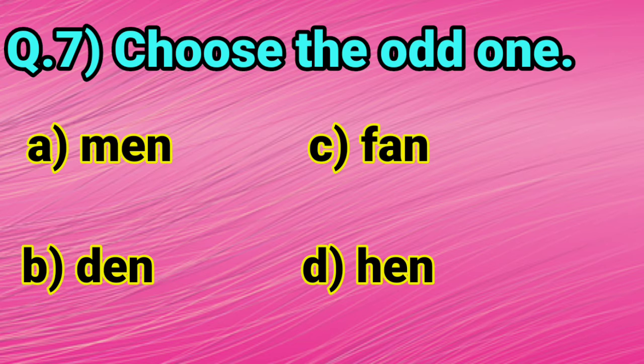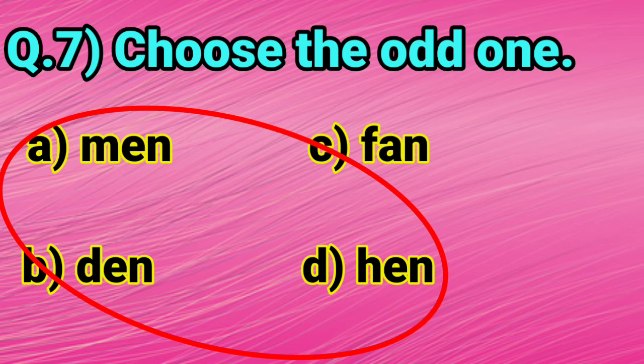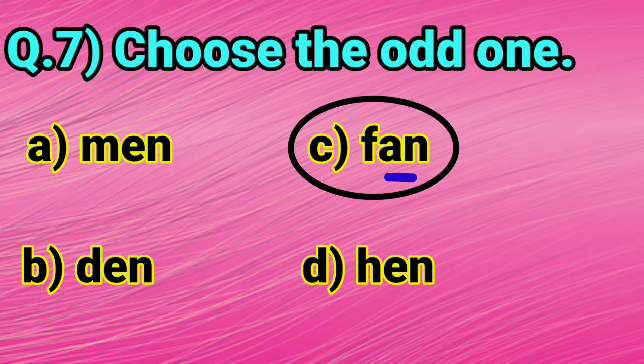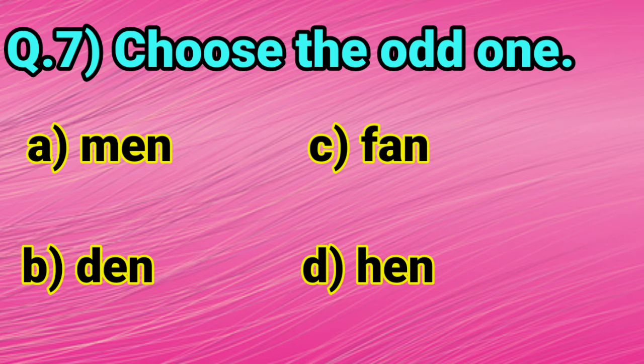Dear kids, have you noticed that men, den and hen are rhyming? They end with the same sound, en. But, fan is different. It ends with the sound, an. So, the odd is fan. The correct answer is fan.